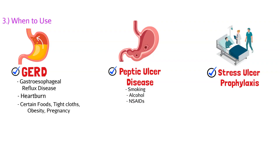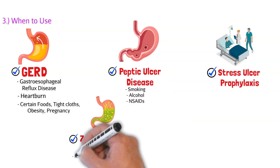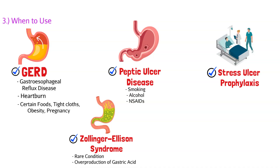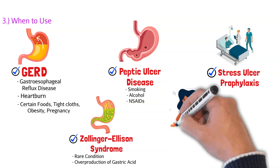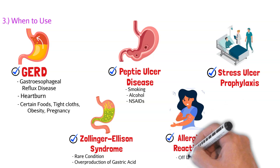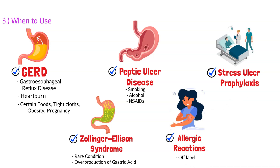There's also a rare condition called Zollinger-Ellison syndrome, where there is an overproduction of gastric acid substantially higher than normal — H2RAs can help bring acid production back toward baseline. Lastly, off-label, H2RAs can be used in allergic reactions. They're not the primary choice since allergic reactions mainly involve the H1 receptor, similar to Benadryl, but there is some crossover at the H2 receptor level.